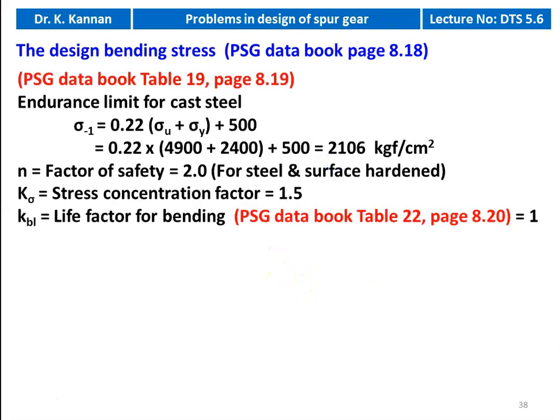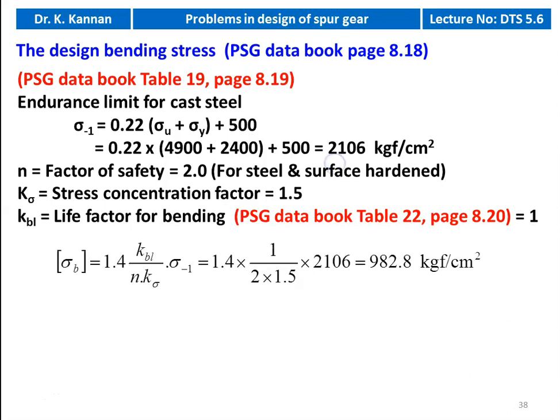We calculate the design bending stress. Data required is available on pages 8.19 and 8.20. Endurance limit σ₋₁ = 0.22 × (σu + σy) + 500 = 0.22 × (4900 + 2400) + 500 = 2106 kgf/cm². Factor of safety = 2 for steel, surface hardened. Stress concentration factor Kσ = 1.5, life factor KBL = 1. Design bending stress σB = 1.4 × 1 / (2 × 1.5) × 2106 = 982.8 kgf/cm².